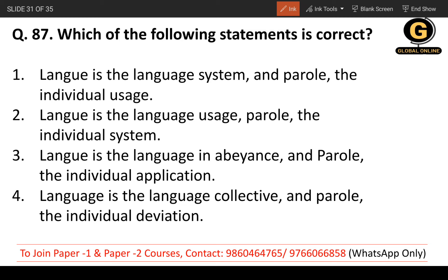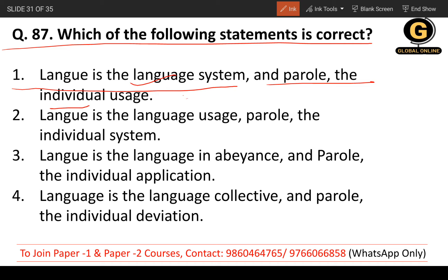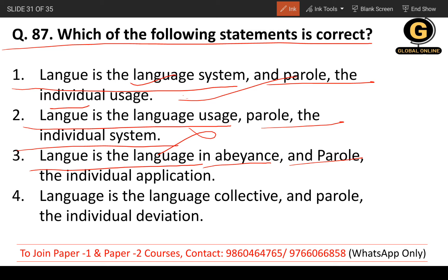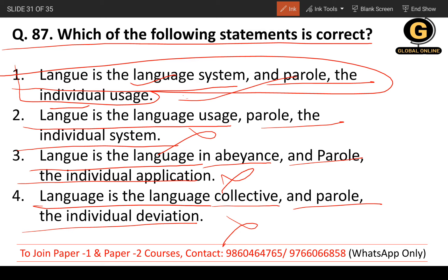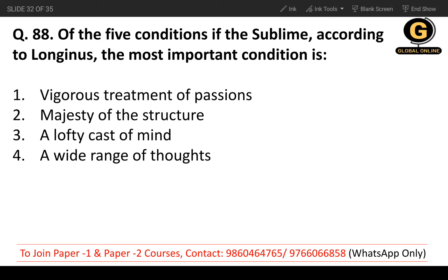Question 87: Which of the following statements is correct? 'Langue is the language system and parole the individual uses' — this is the correct option. 'Langue the language uses, parole the individual system' — incorrect. 'Langue the language in ambience, parole the individual application' — incorrect. 'Langue the language collective, parole the individual deviation' — incorrect. The first option is the correct answer.